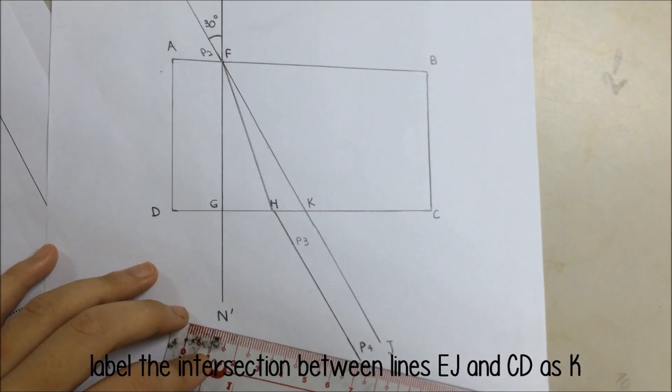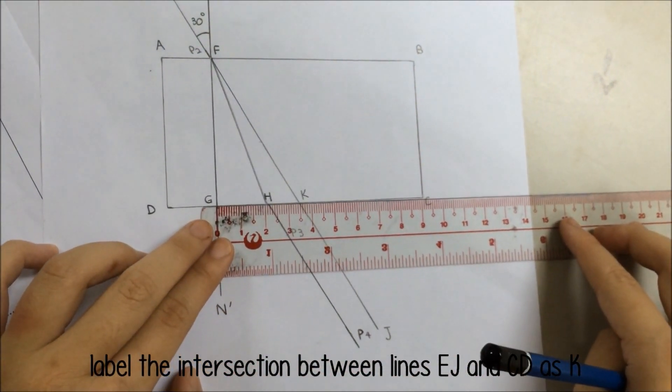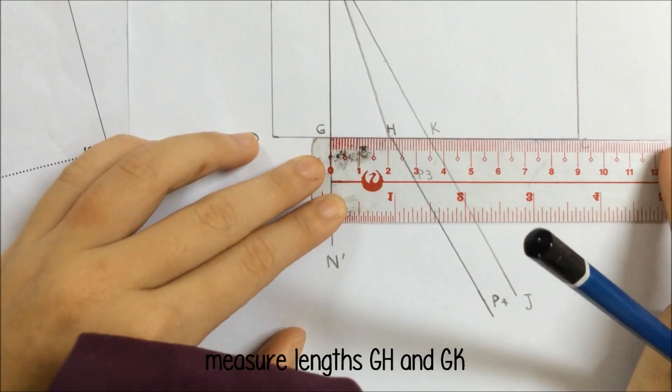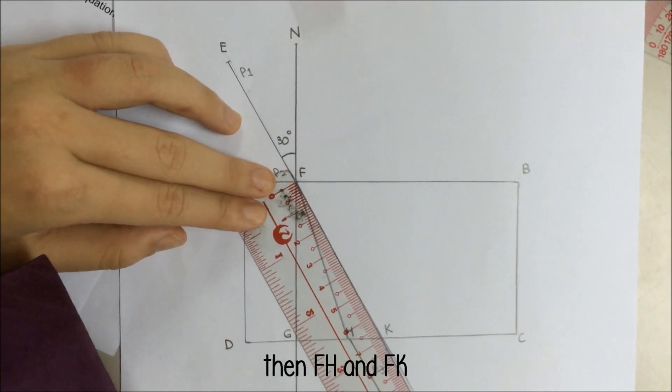Step 11: Label the intersection between lines EJ and CD as K. Step 12: Measure lengths GH and GK, then FH and FK.